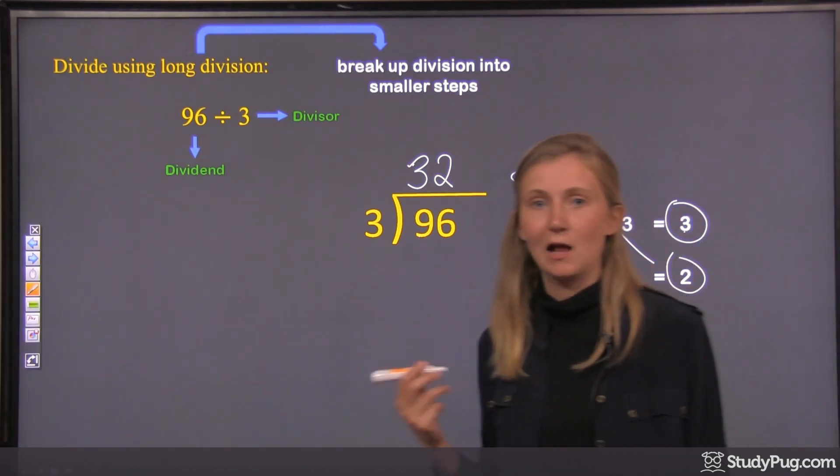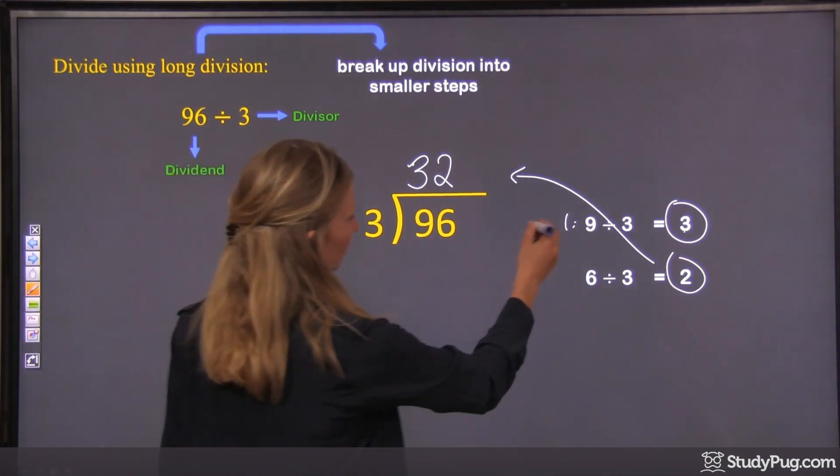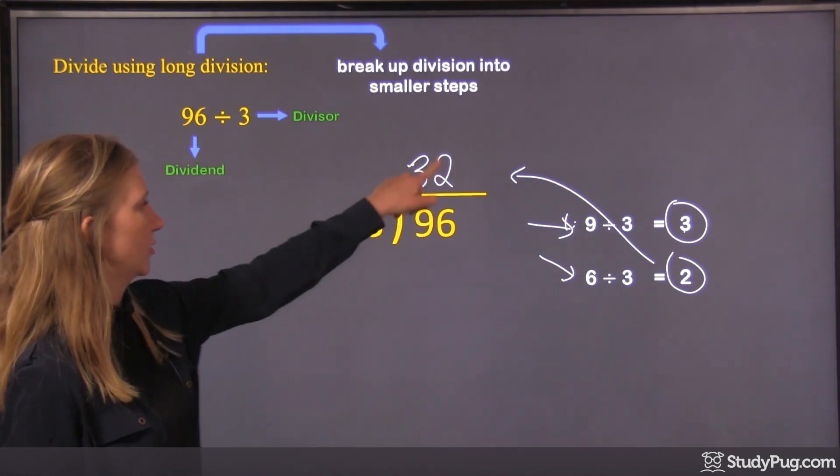So see how long division helps us do the division that we don't know how to do? Because it breaks it down into two steps of division that we do know how to do.